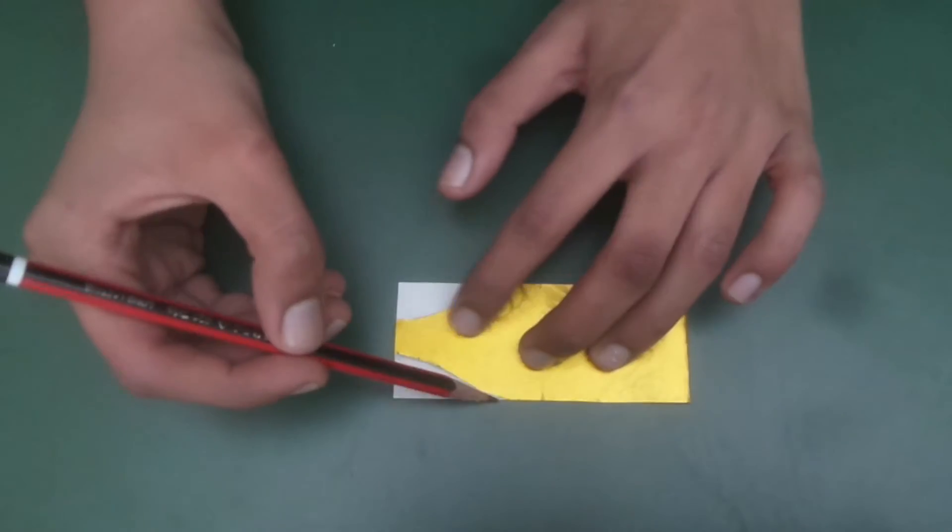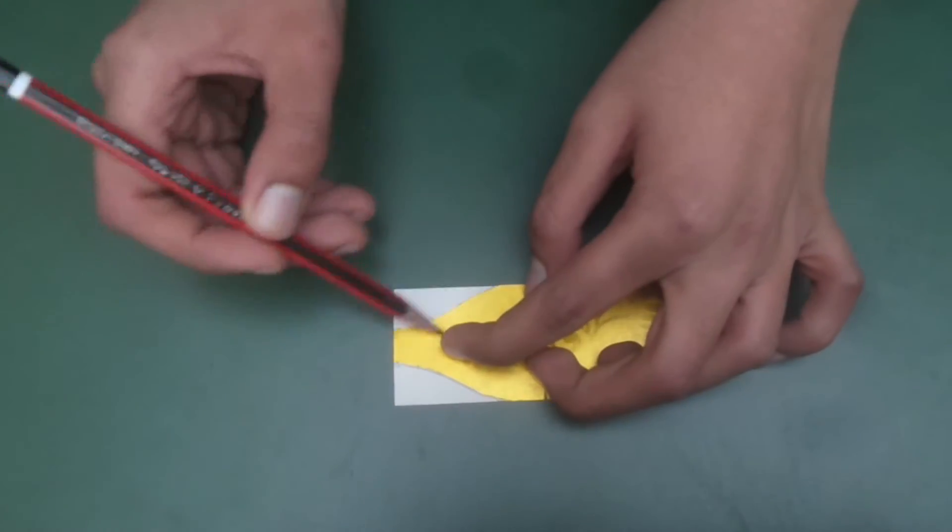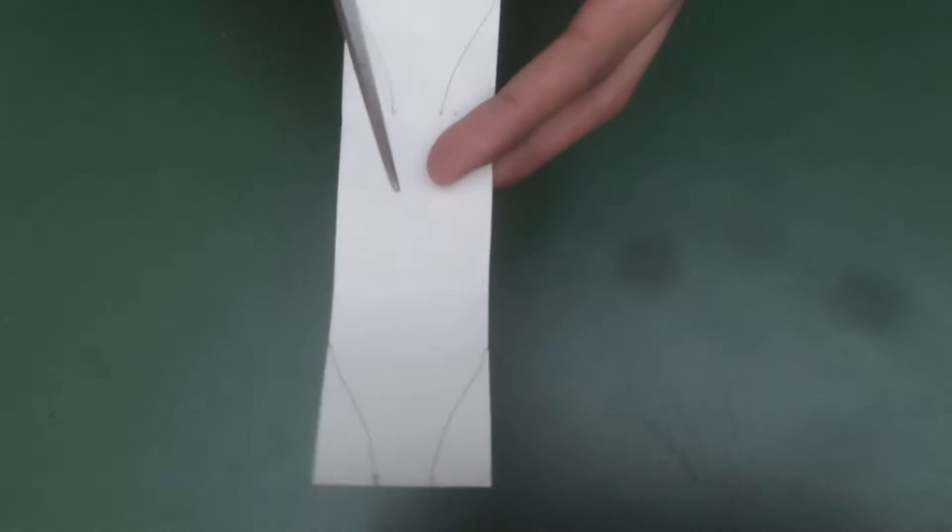The second time we will trace them by folding it half. I'm going to cut the middle traced curves first of all.